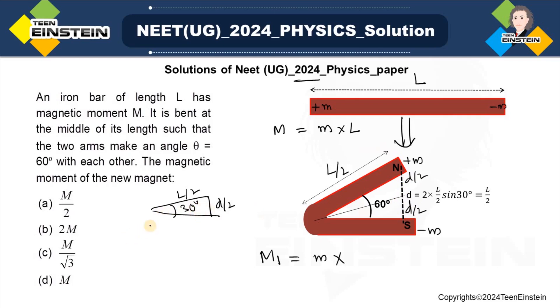Now, we are calculating just D by 2. See, D by 2 by L by 2 is sine 30 degrees, right? So D by 2 is L by 2 into half, sine 30 means half, and D is equal to then L by 2.